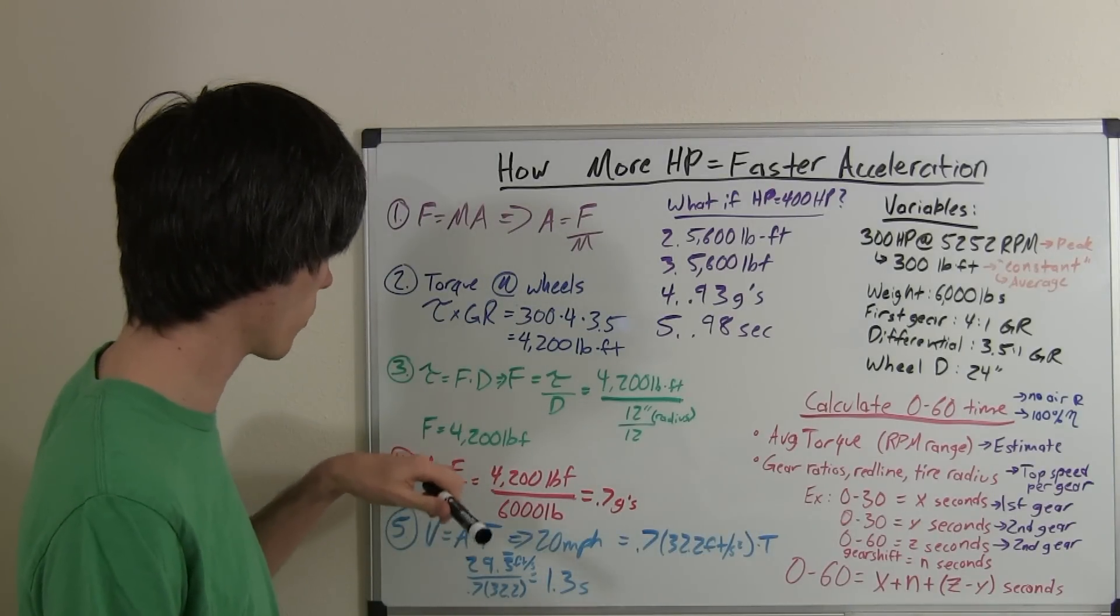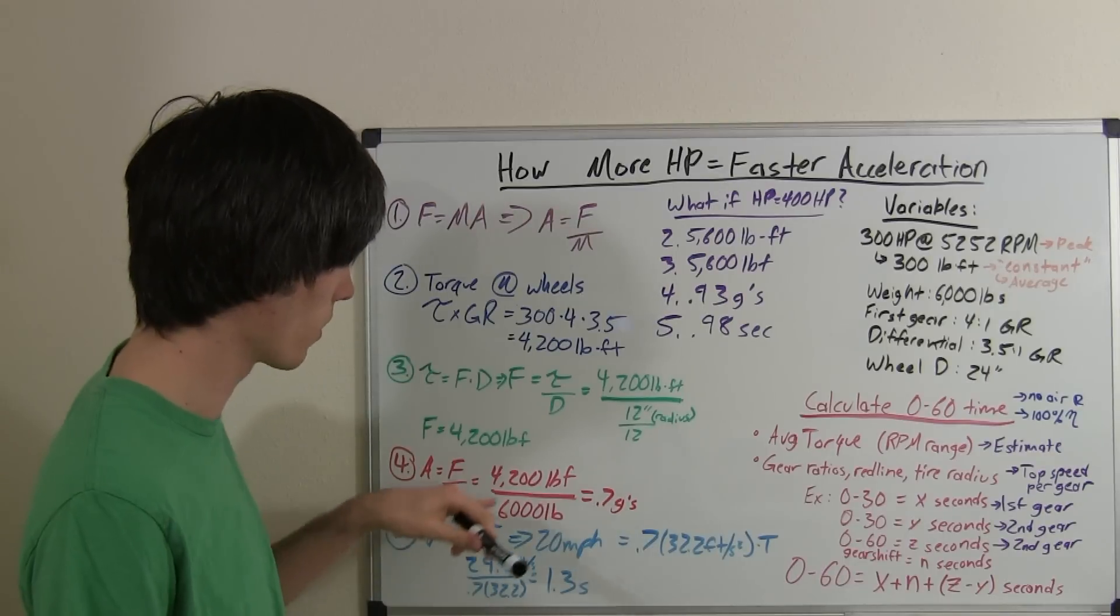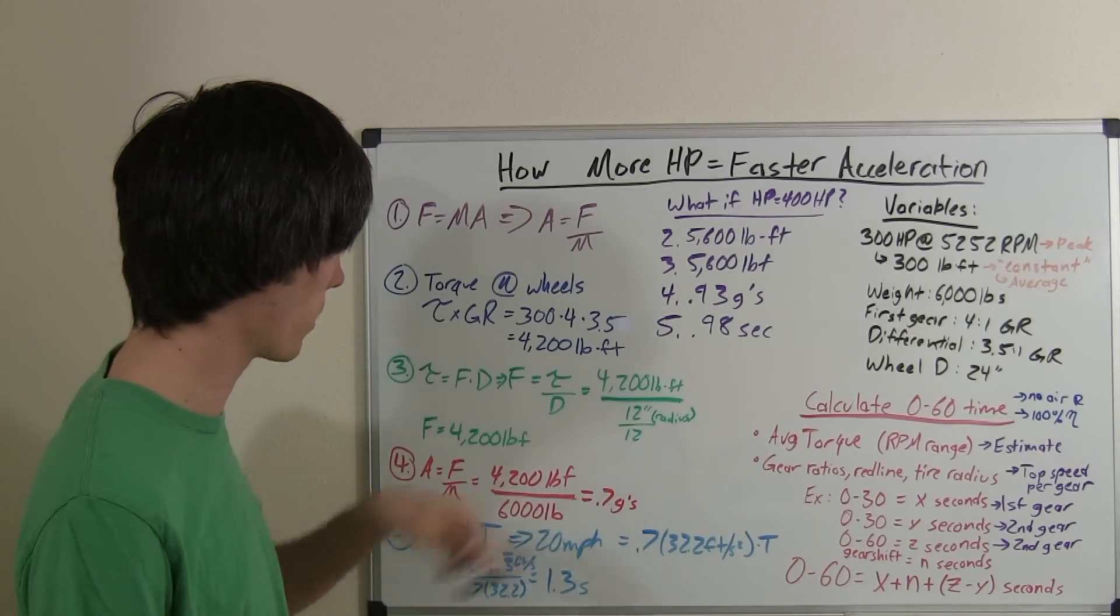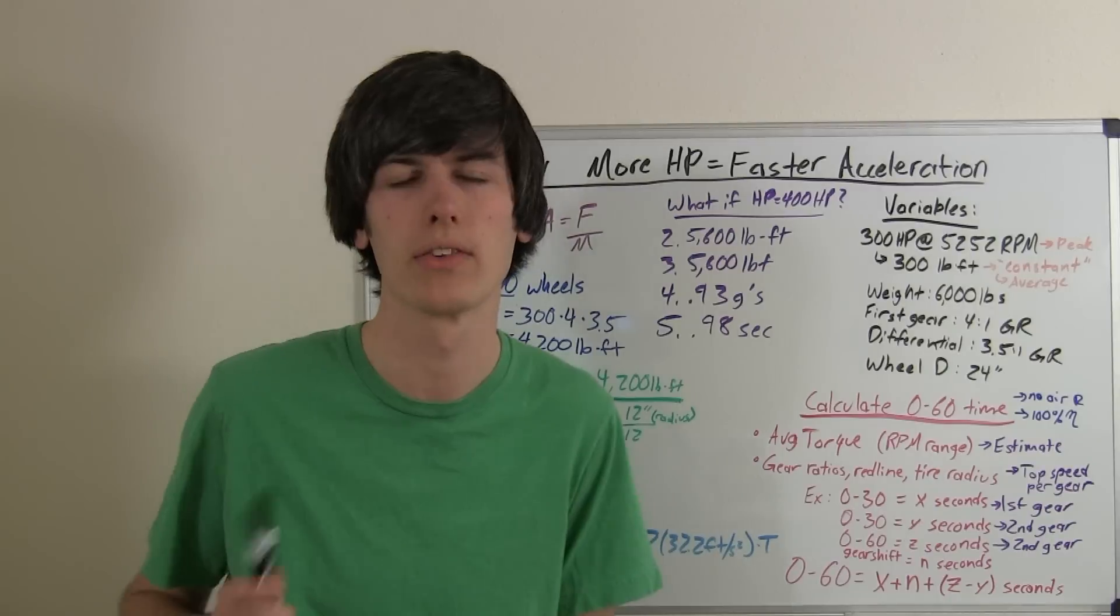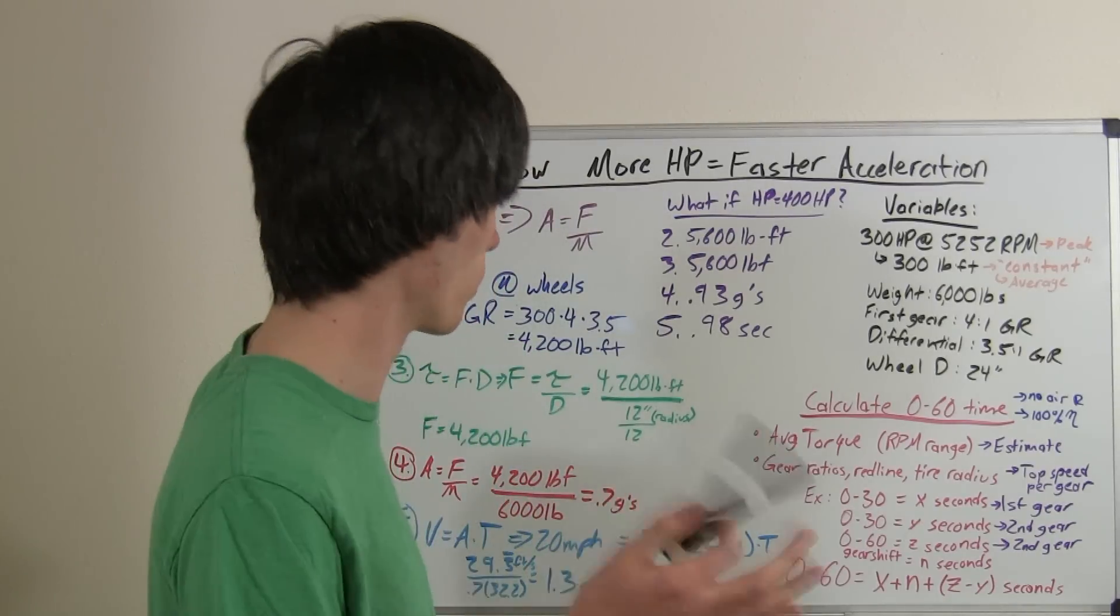So, acceleration equals force divided by mass. That's our equation up here. 4,200 pound-force divided by 6,000 pounds. That's going to give us an acceleration of 0.7 G's. Which is actually really quick.